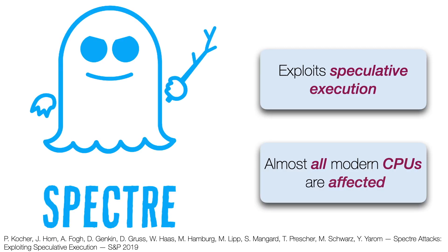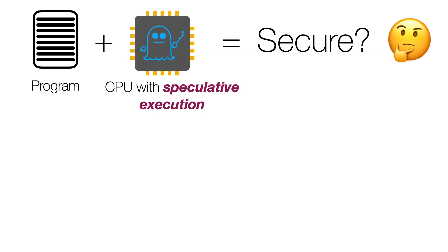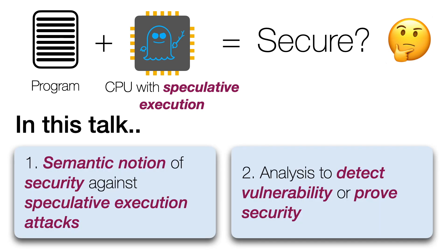Speculative execution attacks such as Spectre exploit speculative execution and optimizations implemented in modern CPUs to leak sensitive information. How can we determine if a given program is secure when executed on a CPU that supports speculative execution? In this talk, I'm going to present a principled approach for reasoning about leaks introduced by speculative execution. Specifically, I will present a semantic notion of security against speculative execution attacks and an analysis to detect vulnerabilities.